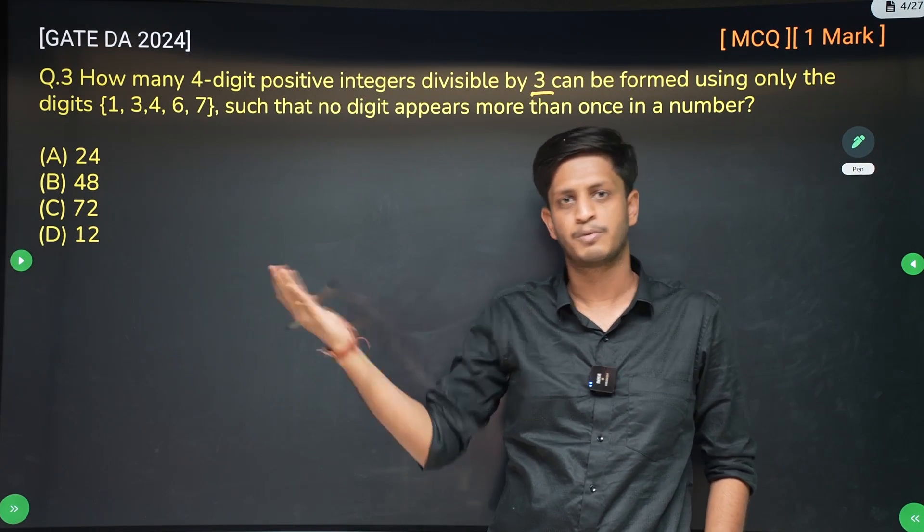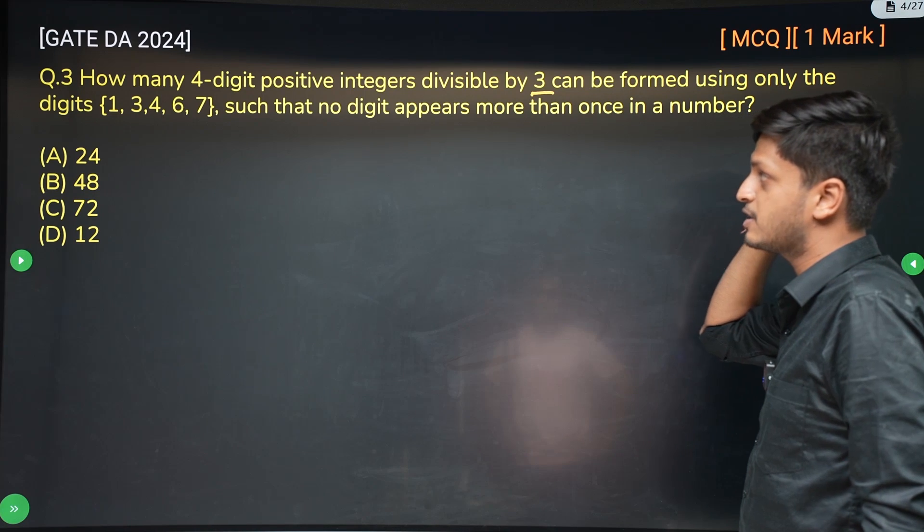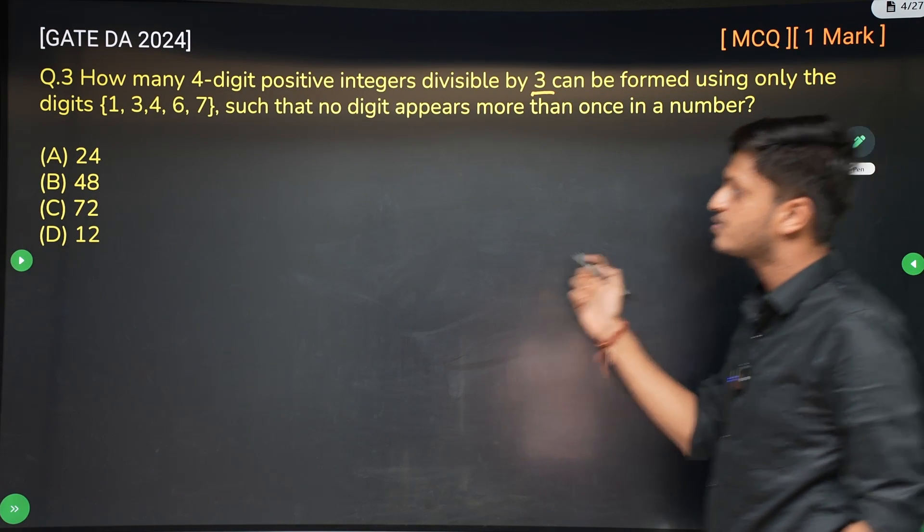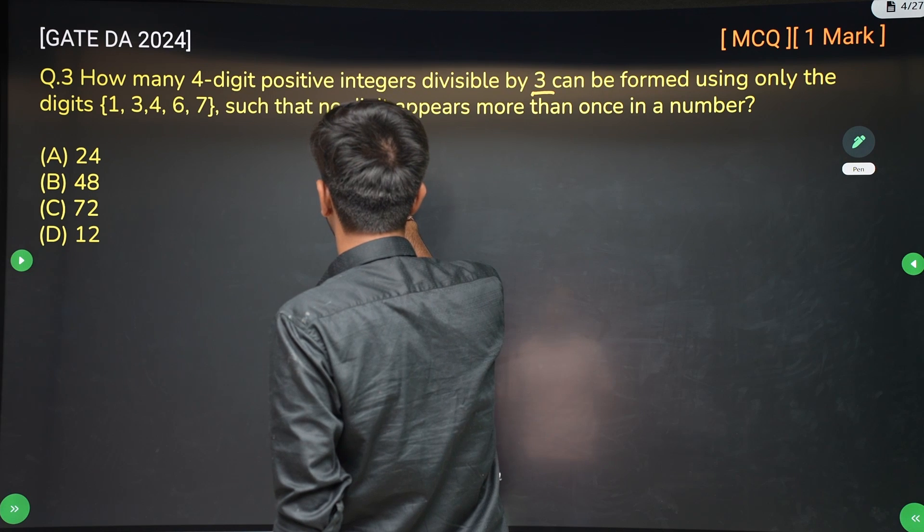It's okay, counting comes under both. So how many 4-digit positive integers divisible by 3 can be formed using only the digits 1, 3, 4, 6, and 7? So we are given 5 digits.